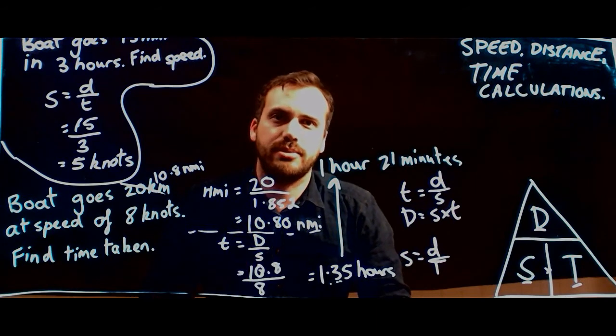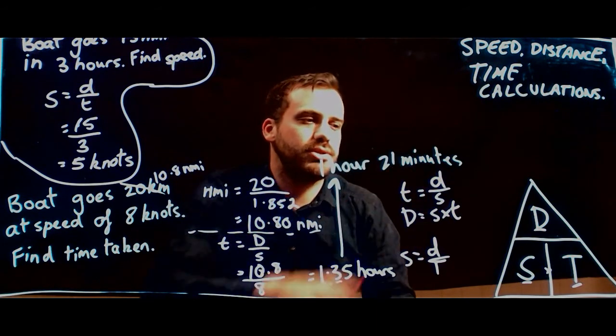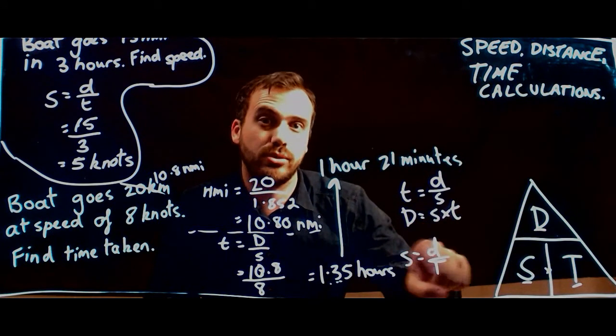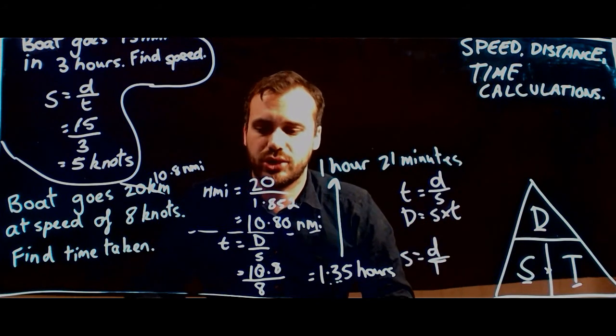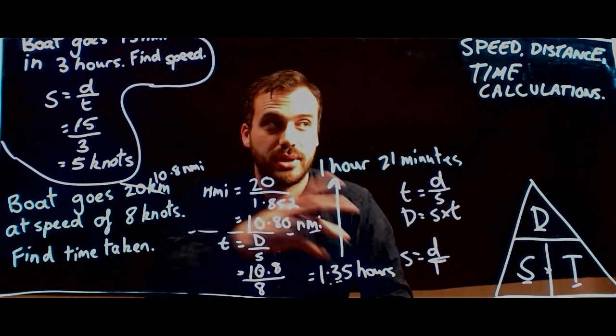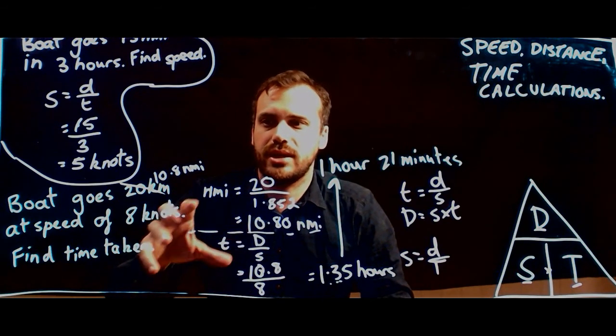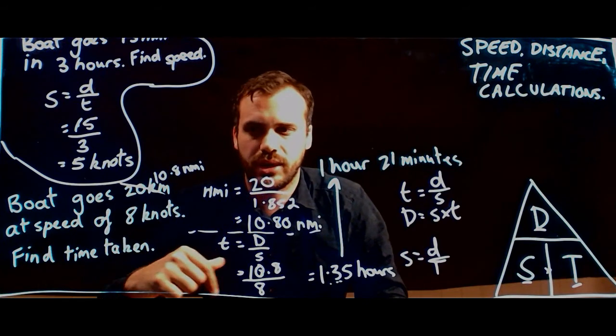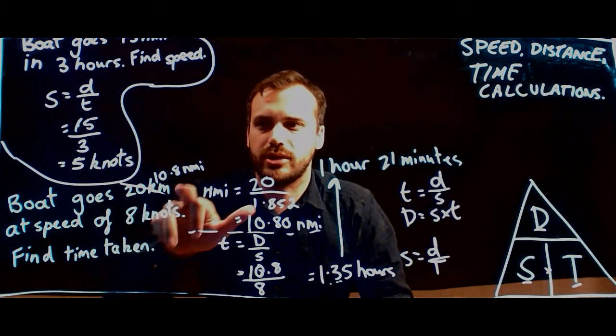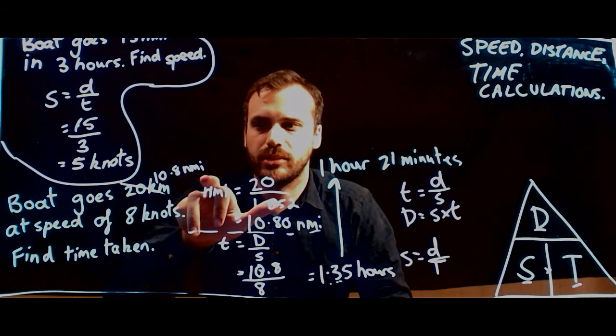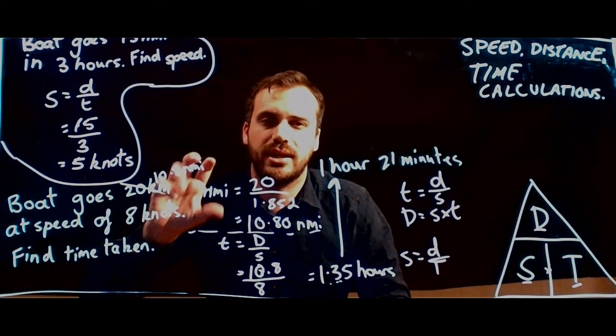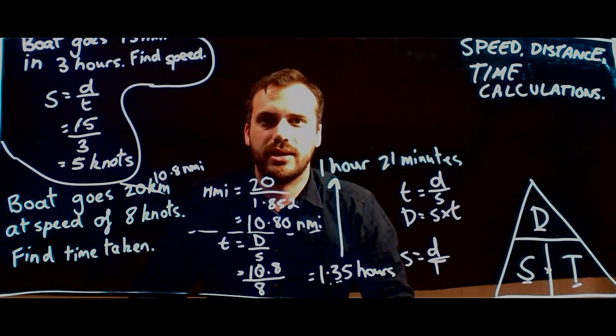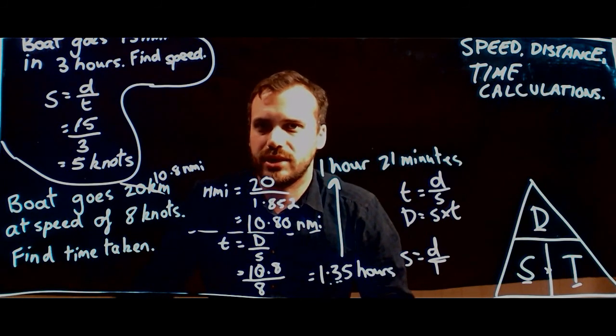So really just a couple of things to keep in mind here. One, speed distance time calculations. You can use your handy triangle here to figure out the three formulas. And then always make sure that if you're doing a speed distance time calculation, that either everything is talking like a regular person, kilometers, kilometers per hour, or everyone's talking like a pirate. Nautical miles and knots. They have to be both in those same thing before you can start working with them. Okay, now that's speed distance time calculations.